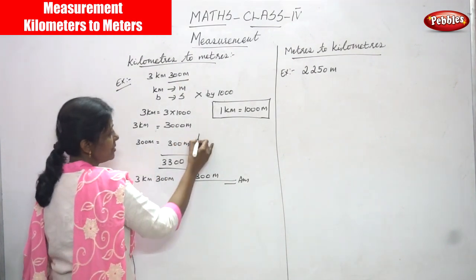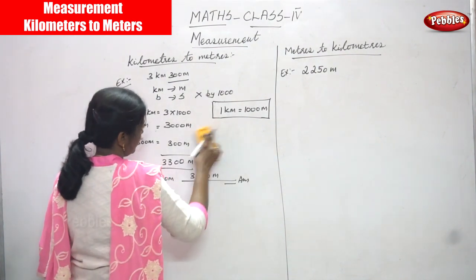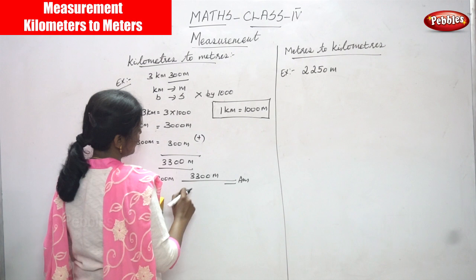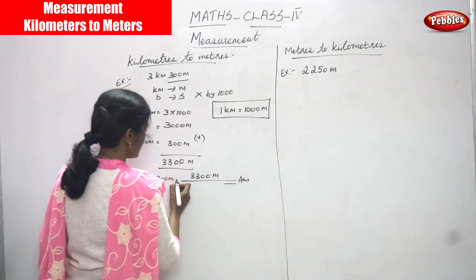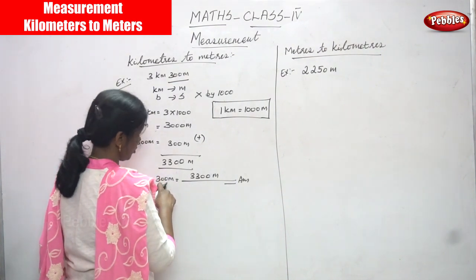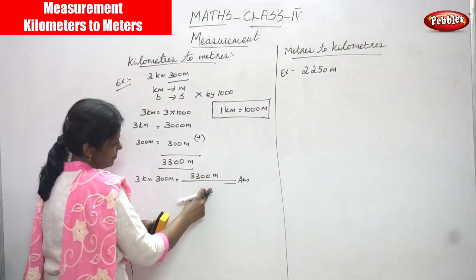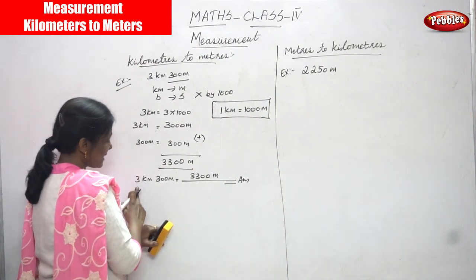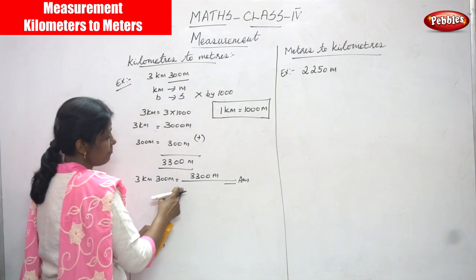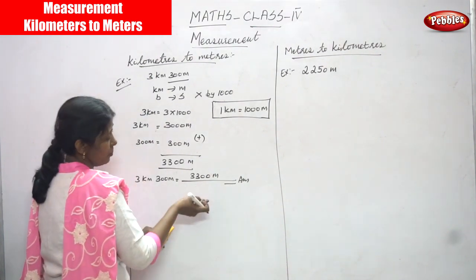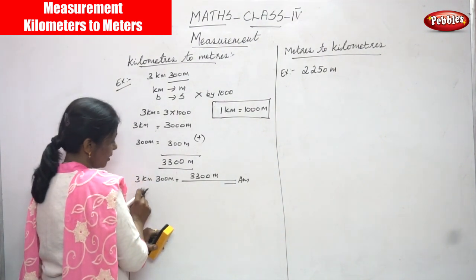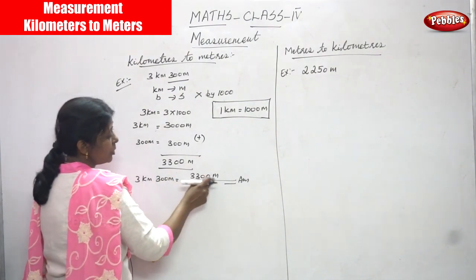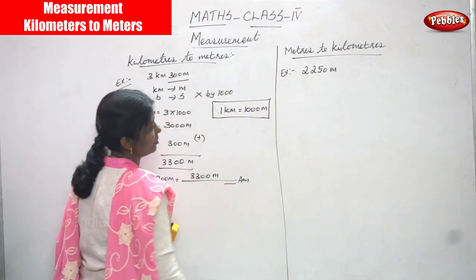Already 300 meters is given in the question, so you must add 300 meters to 3000 meters. Both are now in the same unit, so we add: 3000 meters plus 300 meters equals 3300 meters. That means 3 kilometers and 300 meters converted into meters is 3300 meters — the right answer.